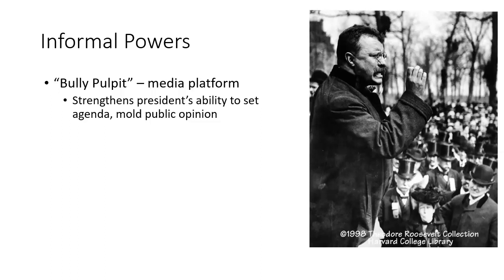One of these informal powers is what Teddy Roosevelt referred to as the bully pulpit. As the only elected leader in American government who represents the entire country, the president is uniquely situated to argue that he represents the voice of the people. The office of the president provides a pulpit from which the president can attempt to bully or cajole people to go along with him. This informal power has only grown since Roosevelt's time, as media technology has advanced the ability of the president to present his case directly to the people. The bully pulpit is especially effective for setting the agenda and also for molding public opinion.